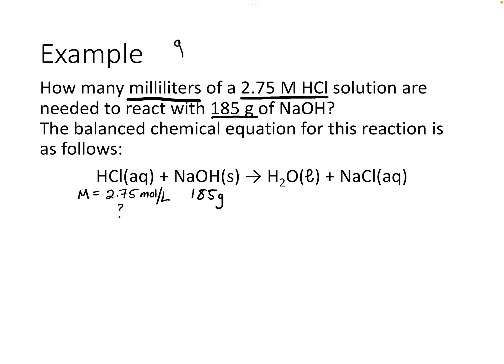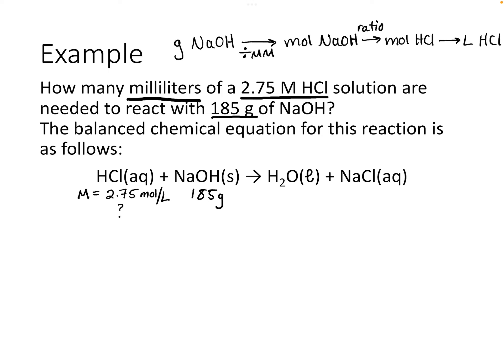Following the flow chart: convert grams of NaOH into moles, then convert moles of NaOH to moles of HCl using the one-to-one ratio from the balanced equation, then convert moles of HCl to liters by dividing by the molarity. In the first step we divide by molar mass; in the second step we use stoichiometric coefficients; in the last step we divide by molarity.